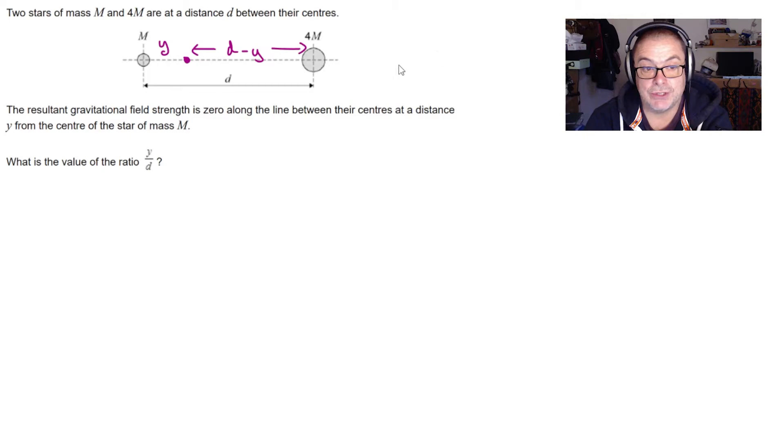So now it's time to do some algebra. Let's remember that gravitational field strength can be defined as g m over r squared. So what we'll do next is work out what we could call g_m which is going to be equal to the gravitational field strength of the smaller star which is simply going to be g m over y squared.